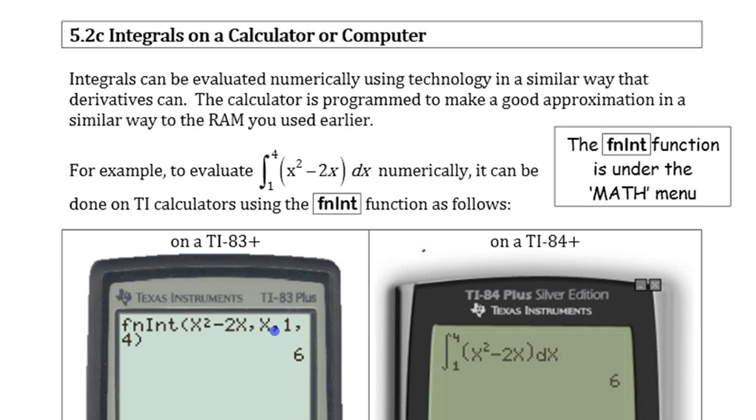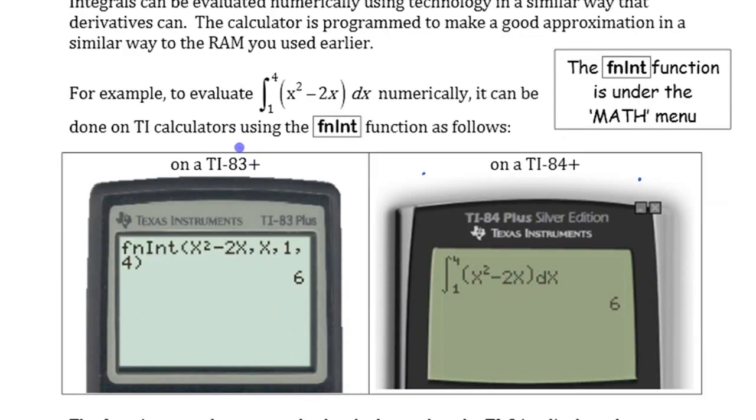So we can set up, you can do two things. You can get the calculator to spit out the number of what it is, which is shown here, shows on the screen there. On a TI-83, the function used to be set up where it was fnint, numerical integration, function integration, and that is under the math menu.